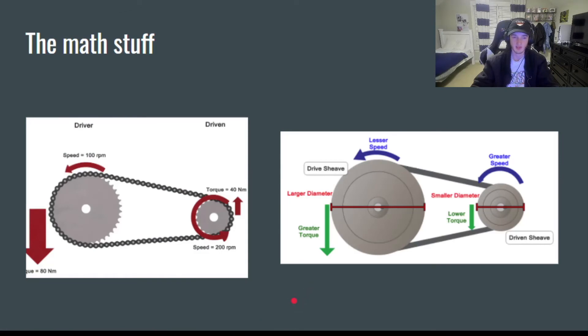Since this is engineering, you already know there's going to be some math stuff involved in belt and chain drives. These pictures may look complicated, but they're basically just trying to illustrate one idea, and that's the idea that your driver sheave is going to affect your driven sheave based on how big or small both of those are.